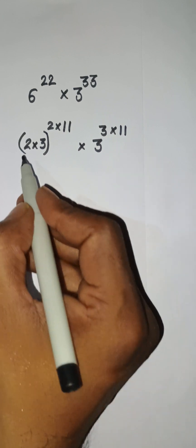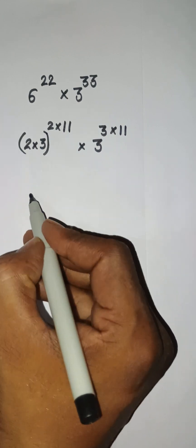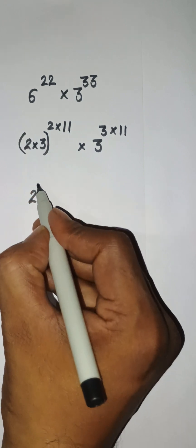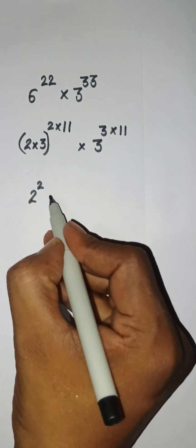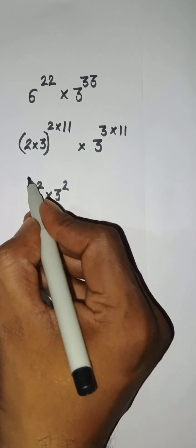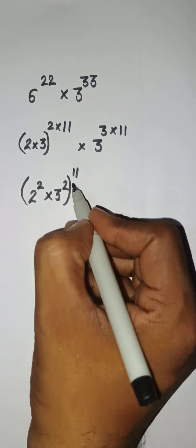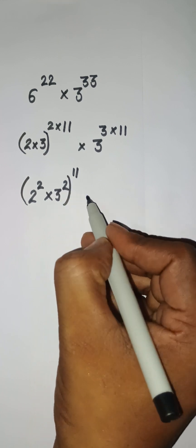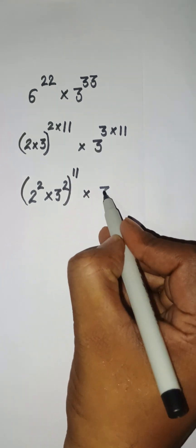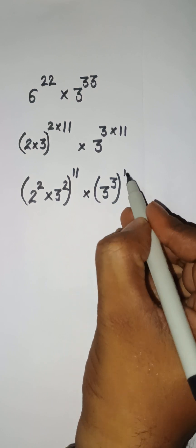Now I can write 2 to the power 2, then 3 to the power 2, and the rest — 11 — is here. And now this one can be written as 3 to the power 3, having power 11.